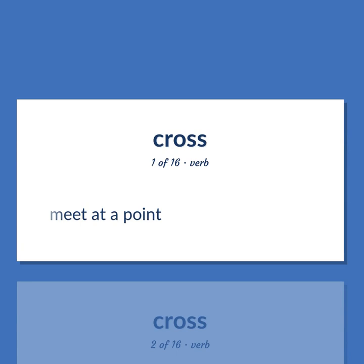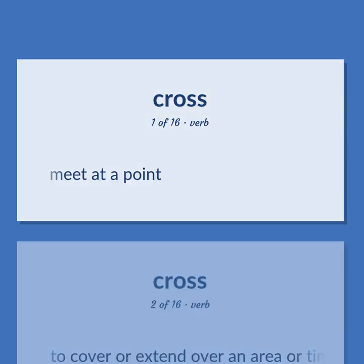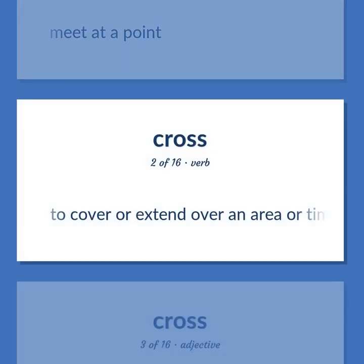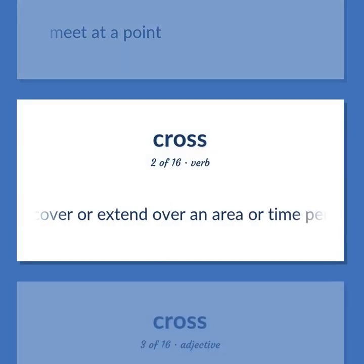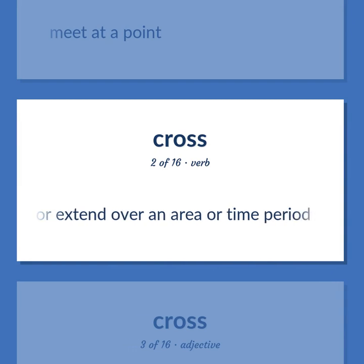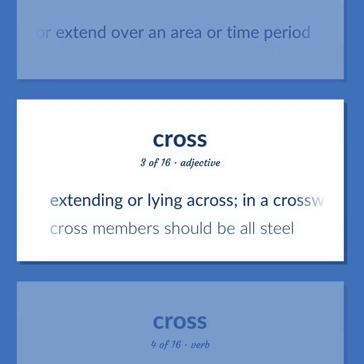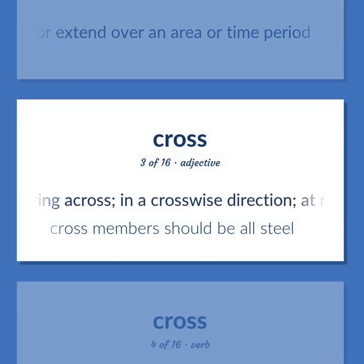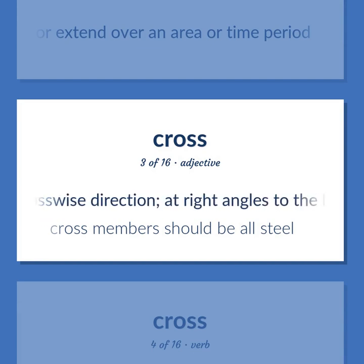Cross: Meet at a point. To cover or extend over an area or time period. Extending or lying across, in a crosswise direction, at right angles to the long axis.